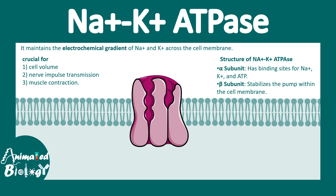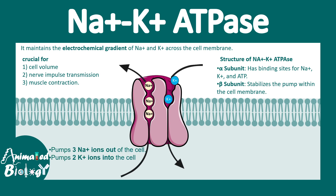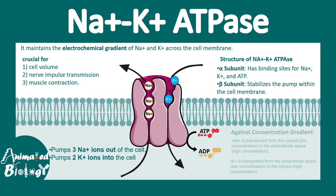Here we can see that three sodium and two potassium ions can bind to this pump. Three sodium ions are pumped out and two potassium ions are pumped into the cell. This pumping of sodium and potassium happens against the concentration gradient with the help of ATP hydrolysis.